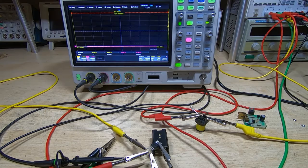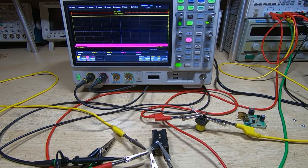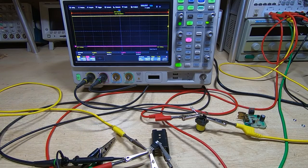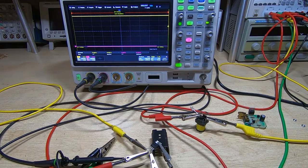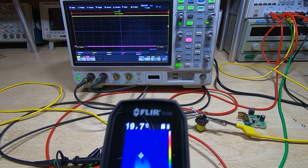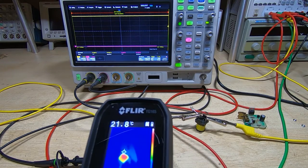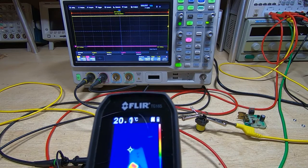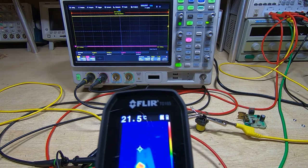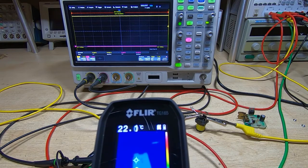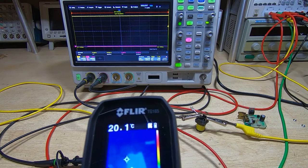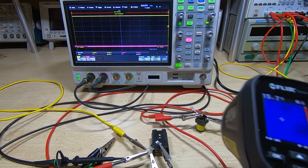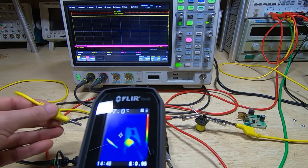I'll turn the bench supply on, make sure that we are turned fully off. We're now drawing zero current. If we look at the device, there was a bit of a current draw when I first turned it on because the gate is floating so it turned on slightly, but even so it's only gone up to about 22 degrees centigrade.